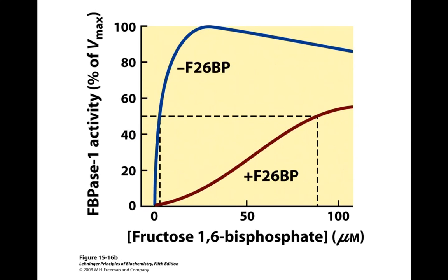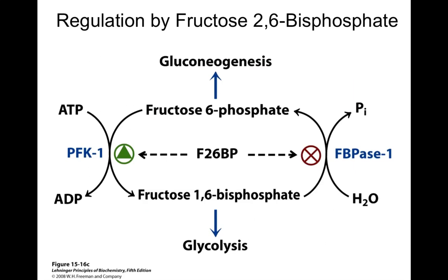Hopefully that clears up the role of those two. When F2,6-BP is high, it's going to activate PFK1 and drive glycolysis, and it's going to stop gluconeogenesis. But if F2,6-BP is low, it's no longer going to inhibit gluconeogenesis, and so gluconeogenesis will be activated. Hopefully that clears up the role of F2,6-BP.